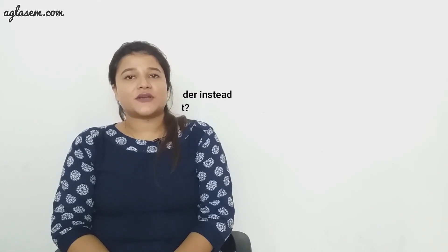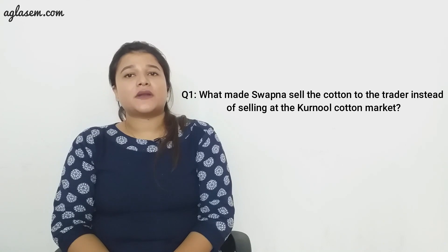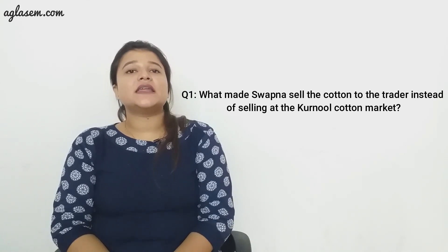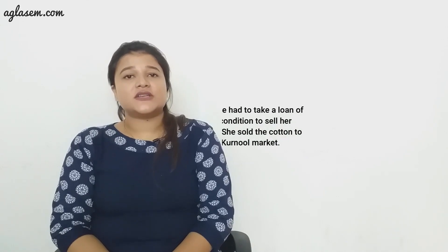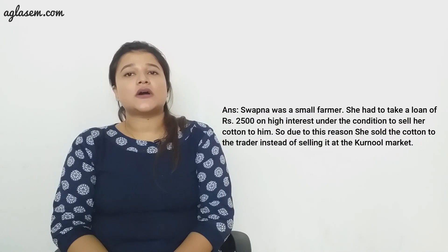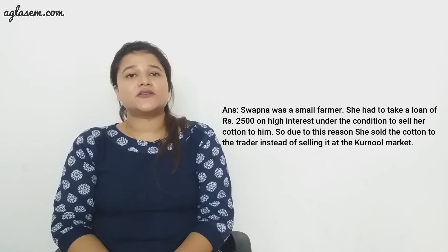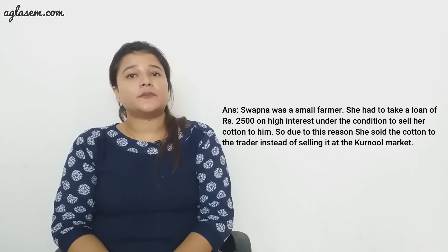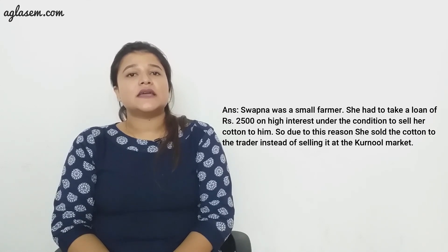Now let's begin with the question and answers. Our first question is: what made Sapna sell the cotton to the trader instead of selling at the Karnool cotton market? Sapna was a small farmer. She had to take a loan of rupees 2500 on high interest under the condition to sell her cotton to him. So due to this reason she sold the cotton to the trader instead of selling it at the Karnool market.